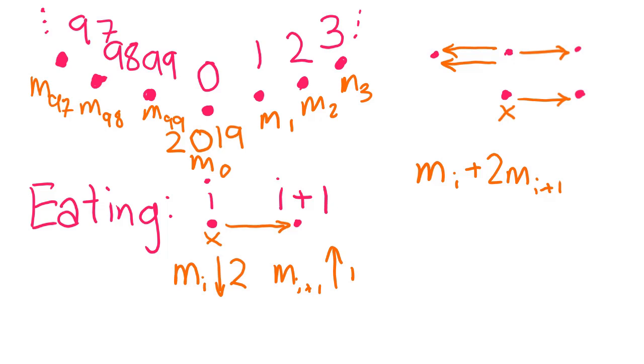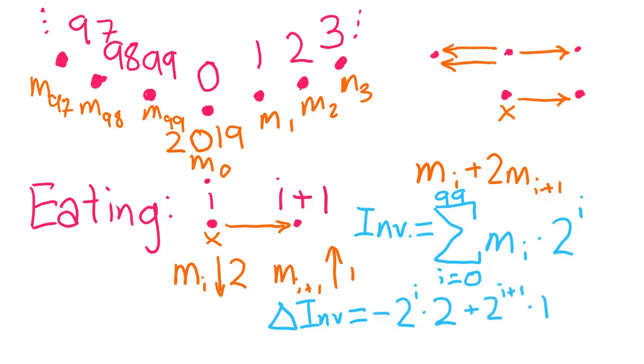So then, for a global invariant expression, consider the binary-like sum from i=0 to 99 of 2^i times m_i. This works pretty well. If a person i eats, then as m_i decreases by 2 and m_{i+1} increases by 1, the invariant decreases by 2 times 2^i but increases by 2^{i+1}, which yields a net change of 0.